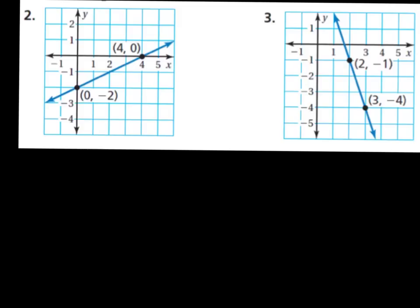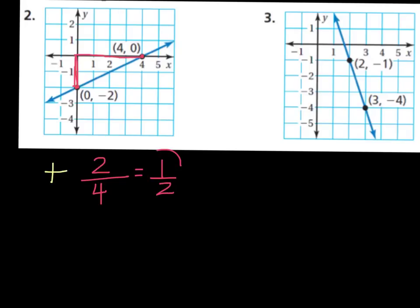We have a couple of problems where we have to find the slope of these lines. First, always look at the line and ask yourself: does it have a positive or negative slope? This first line, as I go from left to right, is going up, so it has a positive slope. I'll note that below. Now I'll pick two points and figure out the rise and run — I go up two and over four, so my slope is positive two-fourths, which simplifies to one-half.